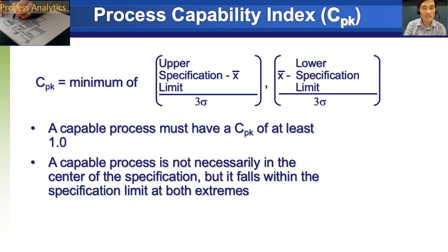CPK is process capability index. It's defined as minimum of either upper specification limit minus x bar over three times sigma or x bar minus lower specification limit divided by three sigma. Whichever is lower, you choose that and that's your process capability index. A capable process must have a CPK of at least 1.0. A capable process is not necessarily in the center of specification, but it falls within the specification limit at both extremes.